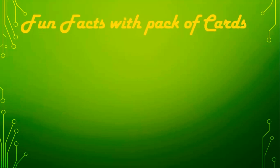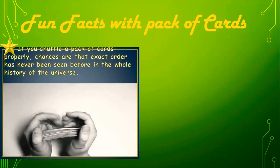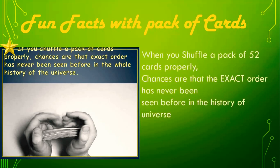Now, fun facts with a pack of playing cards. A pack of playing cards contains 52 cards. When you shuffle a pack of 52 cards properly, the chances are that the exact order has never been seen before in the history of the universe. When you see the cards, you will never see the same pattern again. This is a universal truth — the same pattern you will never get at all.